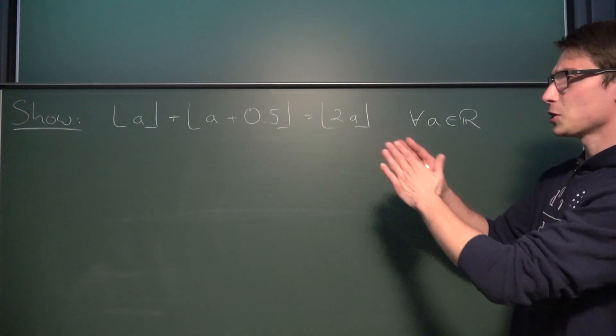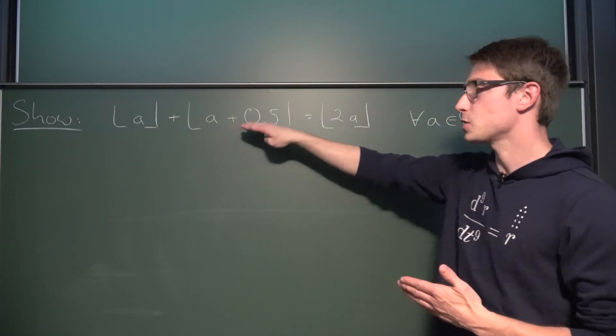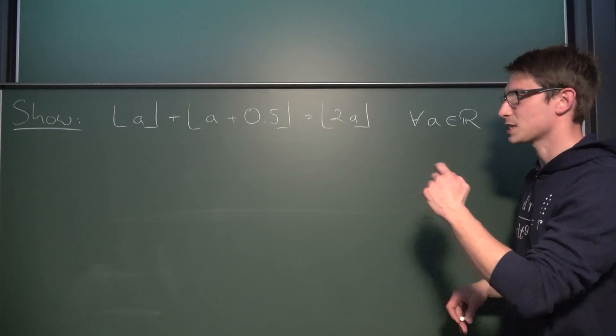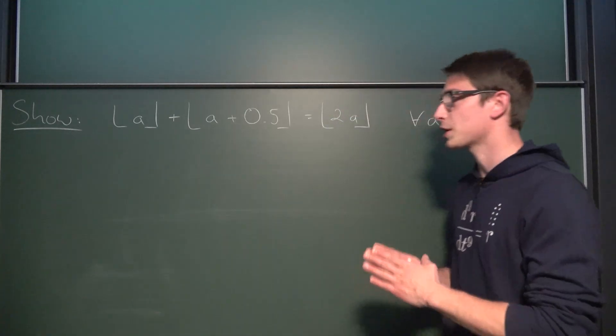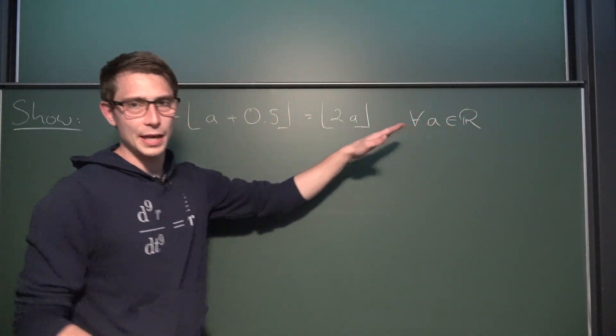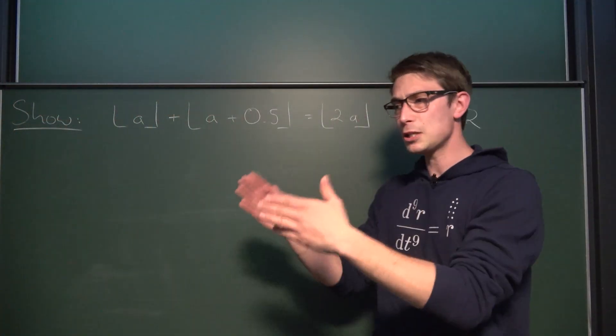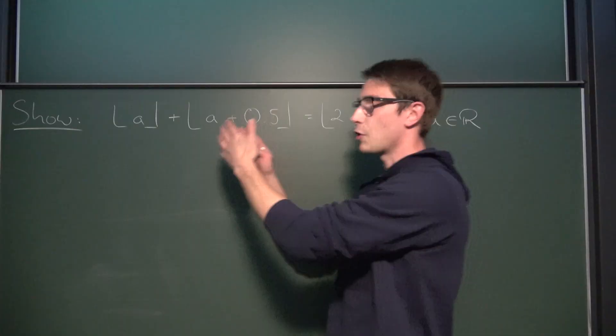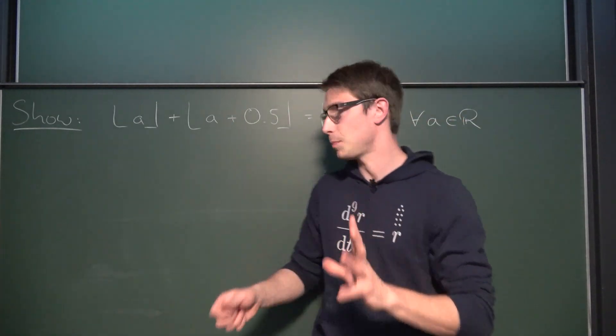Now, we want to show here that the floor of A plus the floor of A plus 0.5 is the same as the floor of 2 times A. And as mentioned previously, we want to take a look at a bit of casework. And before we get started, A is element of the real numbers. Now, each and every real number can be decomposed into its fractional part, so that's the thing behind the decimal point, and the whole integer part.